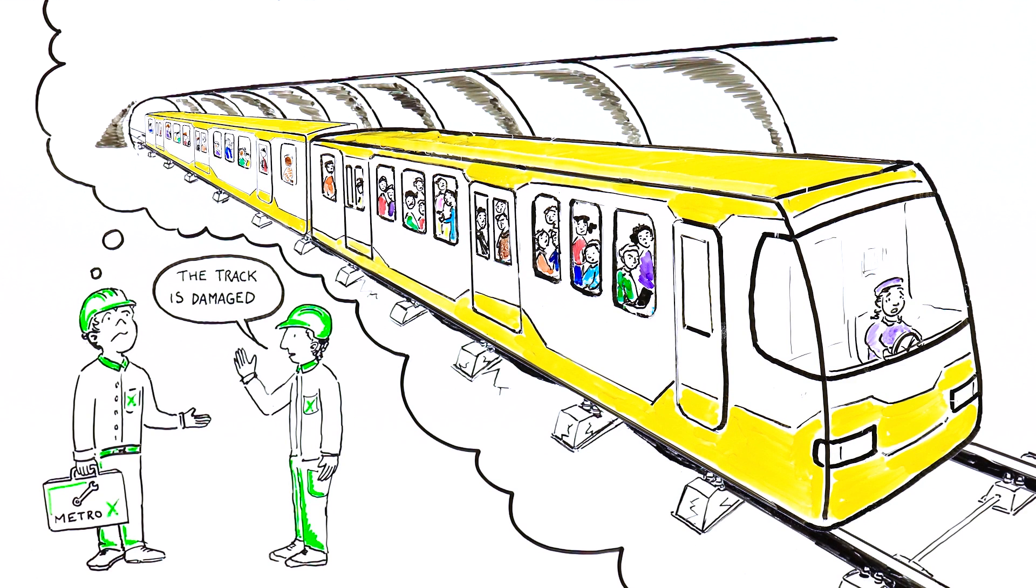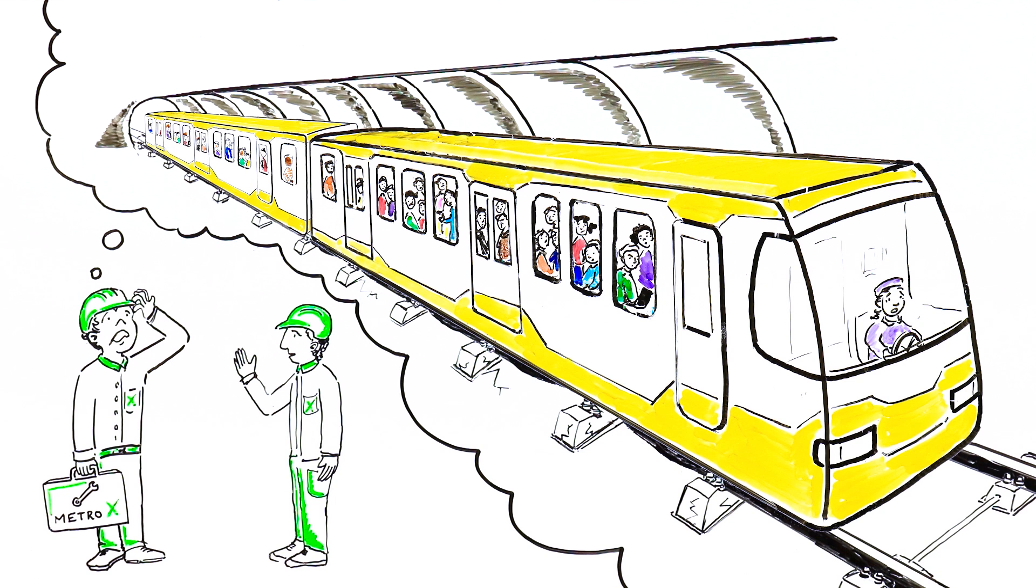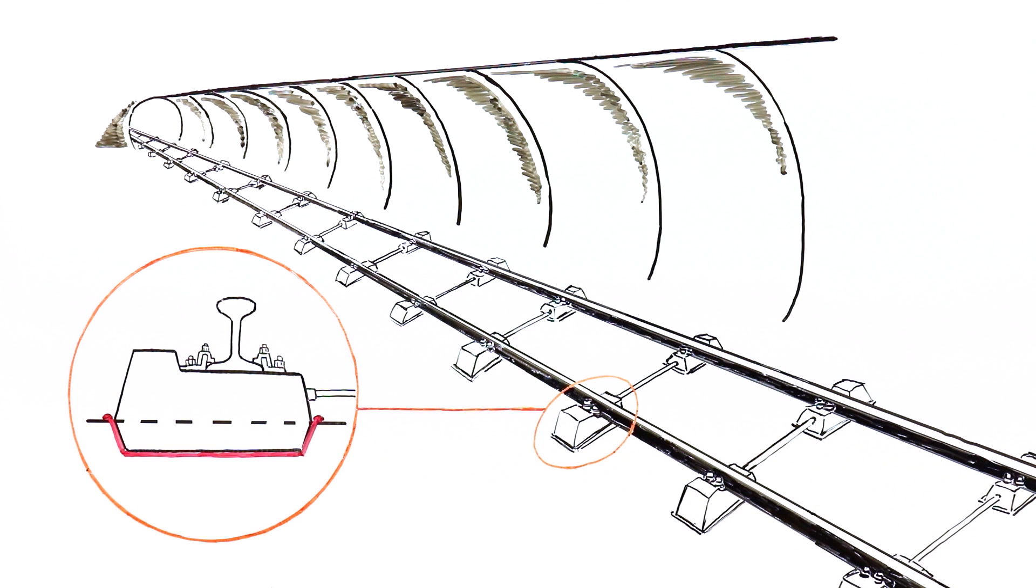With thousands of travelers counting on the metro, Tim knows he has lots of work to do. The load of passing trains has caused small gaps between the rubber boots and the concrete, allowing water in.